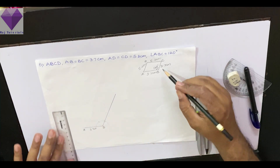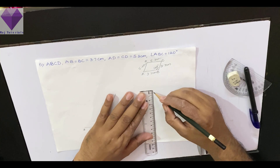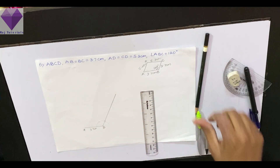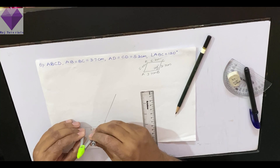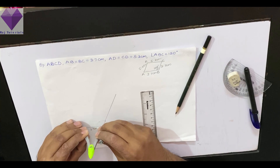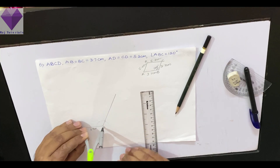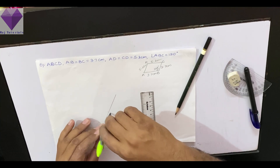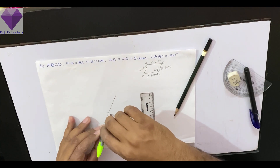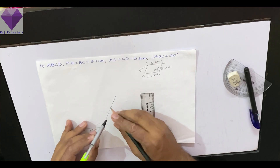Here BC is 3.7 cm, so I will measure 3.7 cm. AB is already 3.7 cm, so I am measuring that and with B as center, I am marking one arc here. This is my C point.